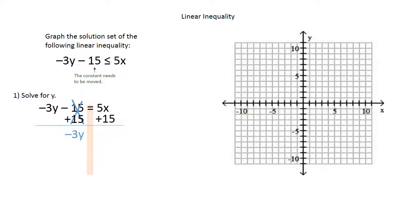On the right-hand side, I would like for the 5x to come before the 15, so I'm going to bring that 5x down first and bump that 15 over to the right, so that it looks more like y equals mx plus b. That leaves me with negative 3y equals 5x plus 15.